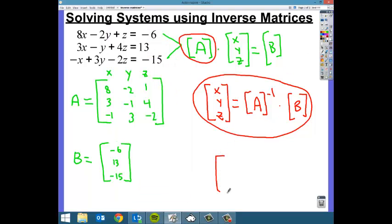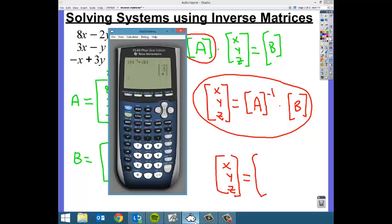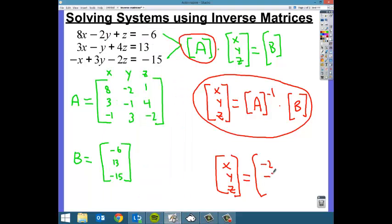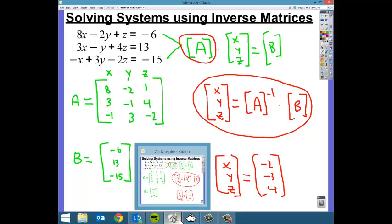So if we think about that in the context of our equation that we had here, we know that this is going to equal negative 2, negative 3, 4. In other words, my x value is negative 2. My y value is negative 3. My z value is 4. You just solved that system of equations really, really quickly and really pretty easily.